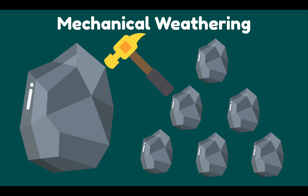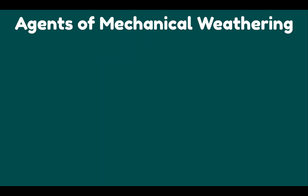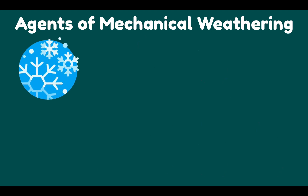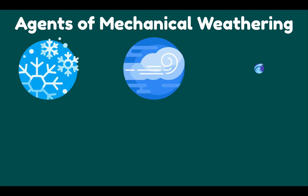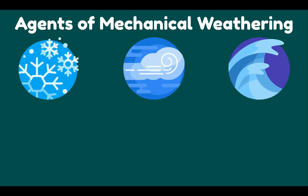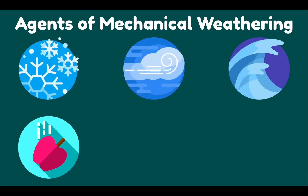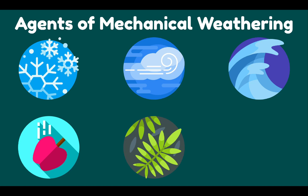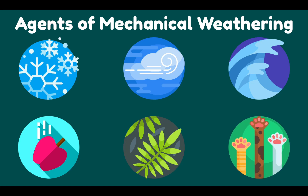There are many ways that rocks can be broken apart into smaller pieces, so mechanical weathering can be brought about by a lot of agents. We have ice, wind, water, gravity, plants, and animals.